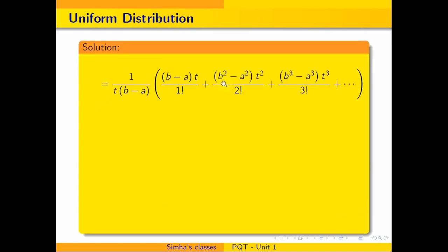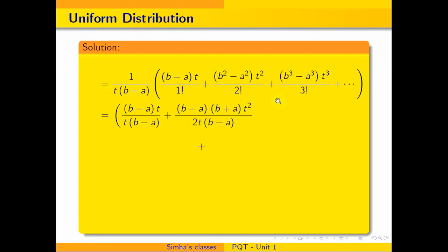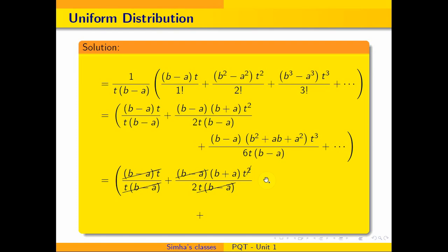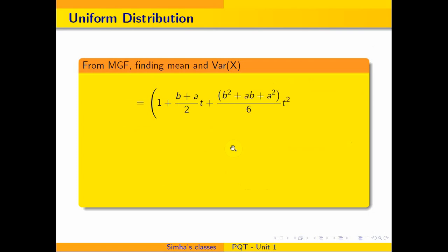Now we simplify further. For b²−a² we factor as (b+a)(b−a), and for b³−a³ we factor as (b−a)(b²+ab+a²). After multiplying through and cancelling (b−a) and factors of t, the terms simplify: t cancels from each term, leaving t, t², etc. in the numerators.